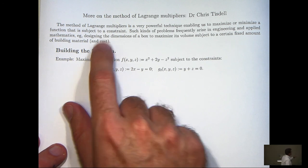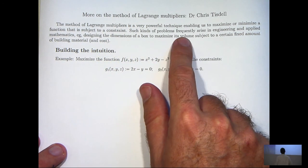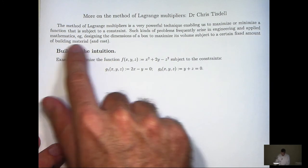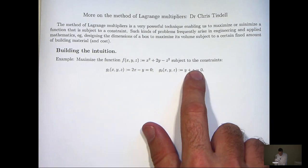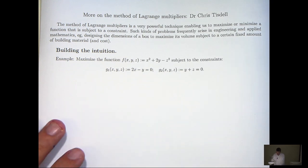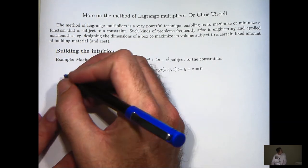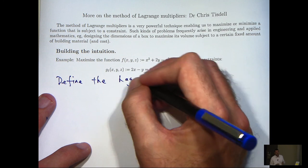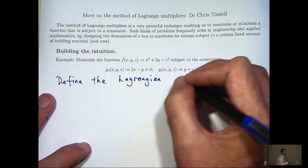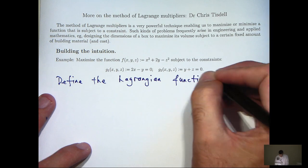The function there that you would want to maximise is the volume of the box and the constraint would be the building material or the cost. The example I'm going to do is quite theoretical, but I hope it gives you a flavour for the importance and the applications of these kinds of methods. So we're asked to maximise this function subject to two constraints. We're going to define the so-called Lagrangian function, which we denote by L.